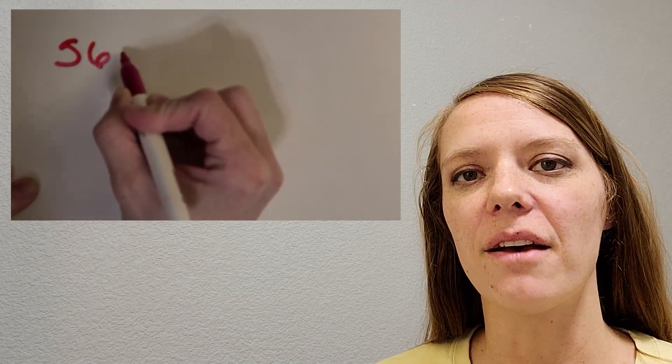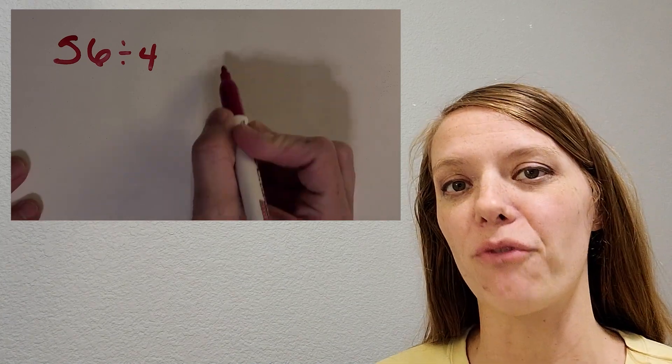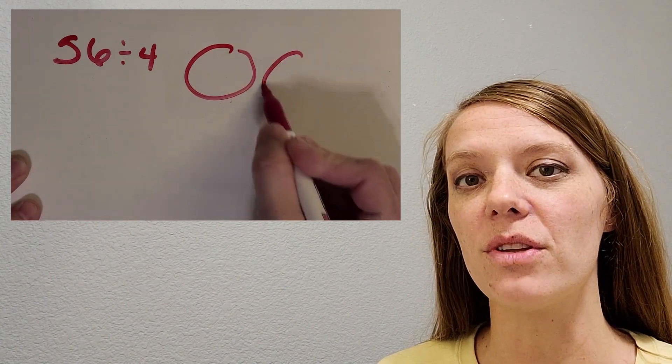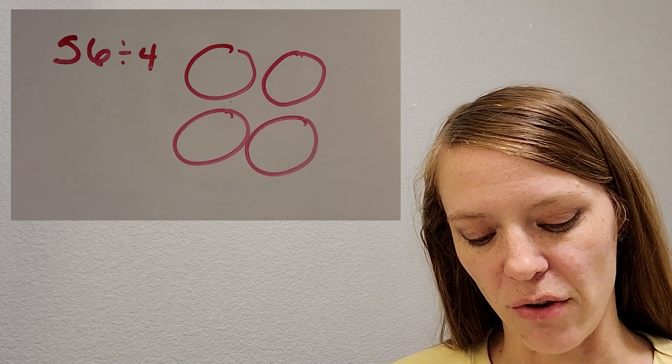So what I love to start with when I'm thinking about division is I like to start with equal groups, because I feel like drawing a picture can really help us understand what division is, how it looks, that kind of thing. So let's just dig in and get started. Since it's divided by four, I'm going to draw four circles. You can do that with me too, on your paper.